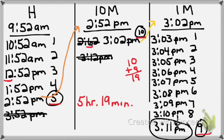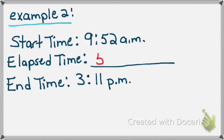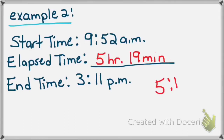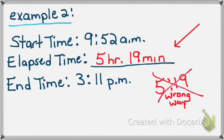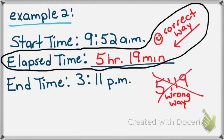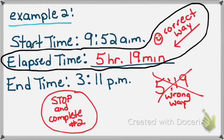Going back to the original problem: the elapsed time is 5 hours and 19 minutes. I wrote it in hours and minutes — not 5:19 with a colon, because that is a clock time, which is different from 5 hours and 19 minutes. The correct way is to write it with the word or abbreviation for hours and minutes. The elapsed time is 5 hours and 19 minutes. Please stop the video and complete worksheet number 2 right now.